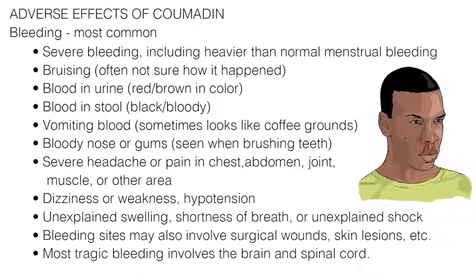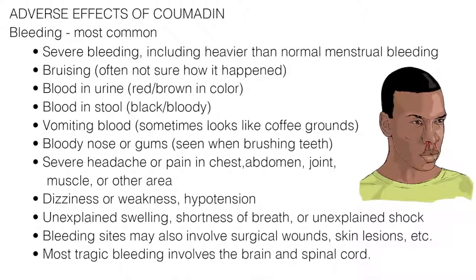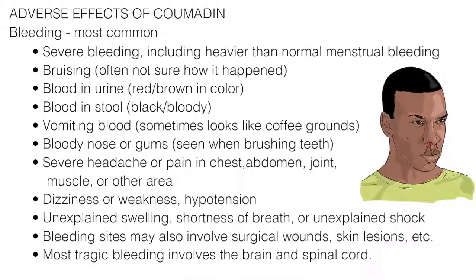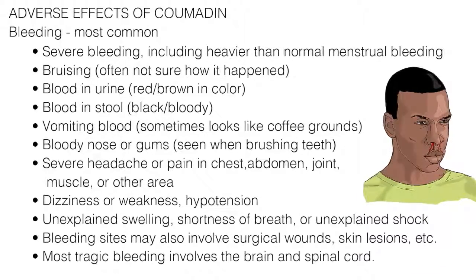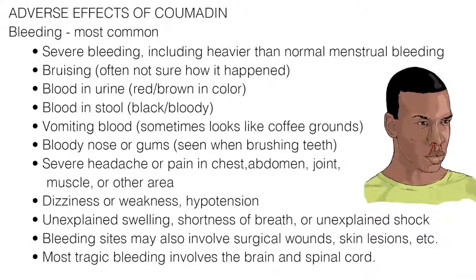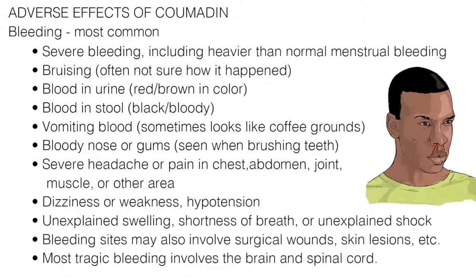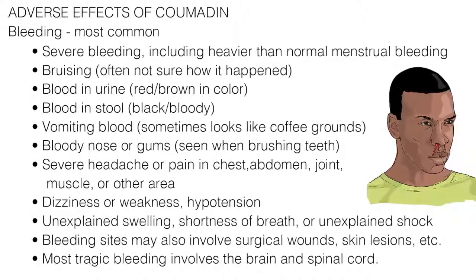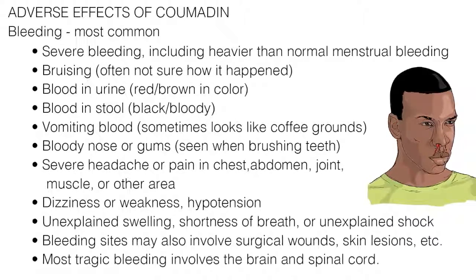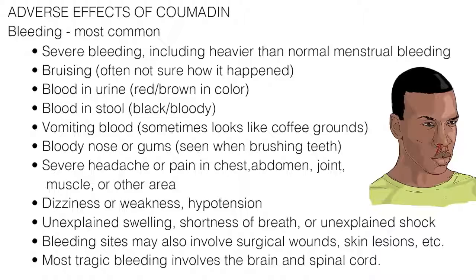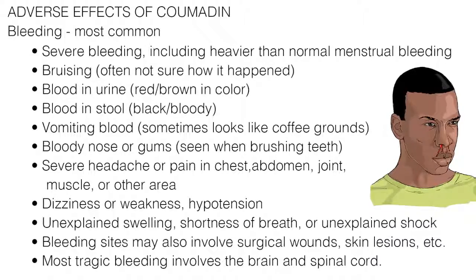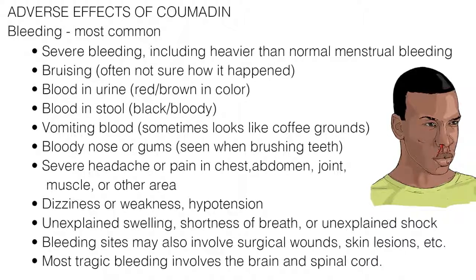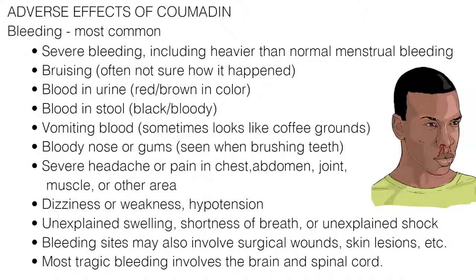Additional bleeding complications include severe headache, pain in the chest, abdomen, joint, muscle, or other area, dizziness or weakness, hypotension, unexplained swelling, shortness of breath, or unexplained shock. Bleeding sites may also involve surgical wounds, skin lesions, or injection sites. The most tragic bleeding involves the brain and spinal cord.